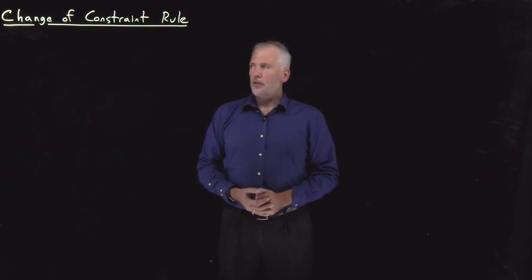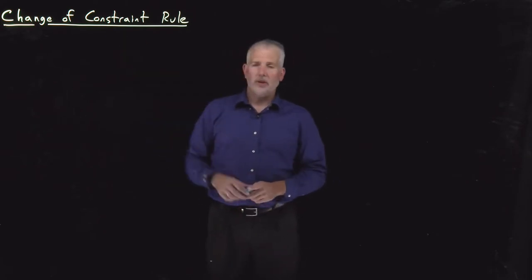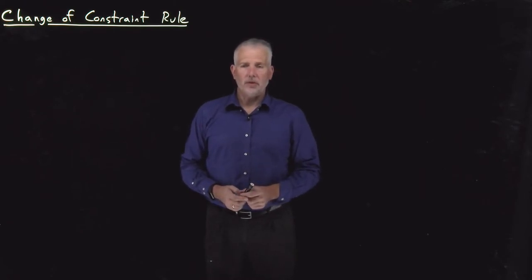So there's one last useful partial derivative identity to talk about, and that's this one called a change of constraint rule or the change of direction rule.